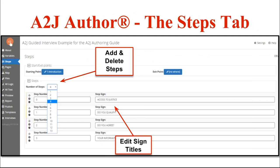The next tab down is the Steps tab. If you think about steps, think about them like an outline — they're the big headline chunks. You can have up to 13 steps in an interview; by default, an interview will come with four. You can edit the name of the steps, the signs, and you can add or delete steps from this tab as well.